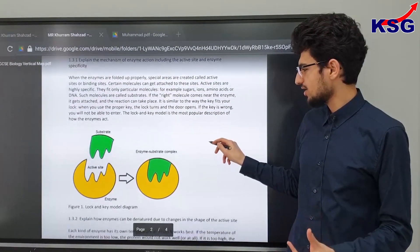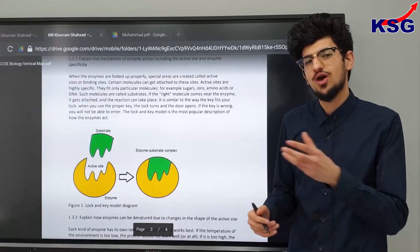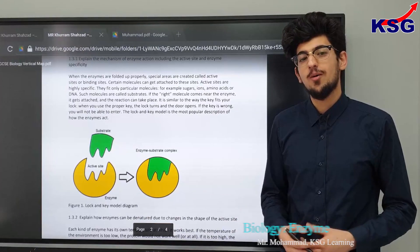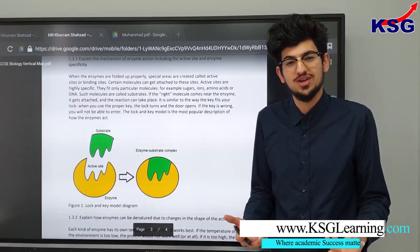Now this lock and key model means that you can't have an enzyme catalyze the rate of reaction of something else. Furthermore there are many other factors that affect how effective an enzyme is.